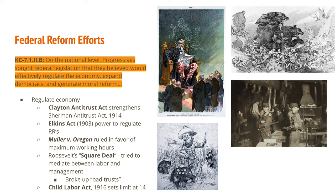On the national level, progressives sought federal legislation to effectively regulate the economy, expand democracy, and generate moral reform. To regulate the economy, the Clayton Antitrust Act strengthened the Sherman Antitrust Act of 1890. The Elkins Act gave more power to the Interstate Commerce Commission to regulate railroad prices. The Supreme Court case Mueller v. Oregon ruled in favor of setting a maximum number of working hours, though at the expense of women's equality — the Court ruled in workers' favor specifically because the plaintiffs were women, reasoning they could not work as many hours, allowing states to restrict maximum working hours.